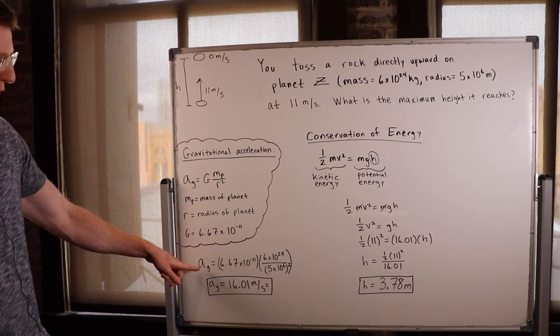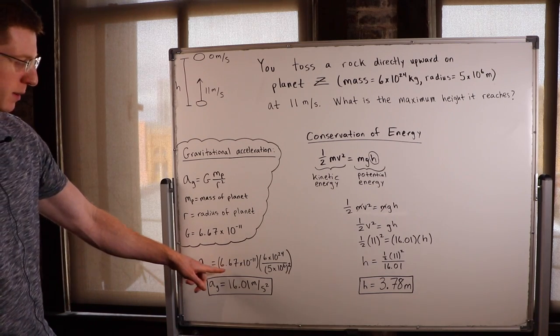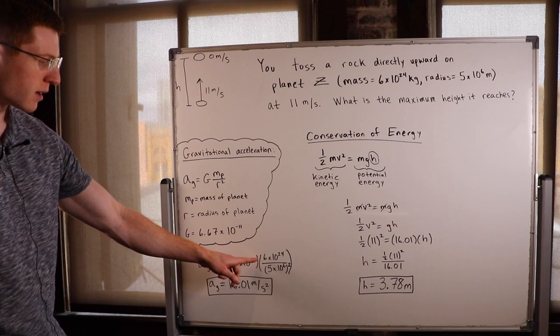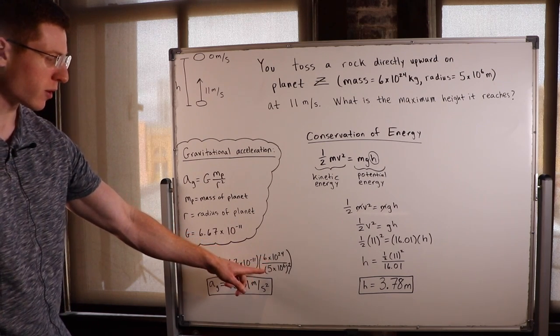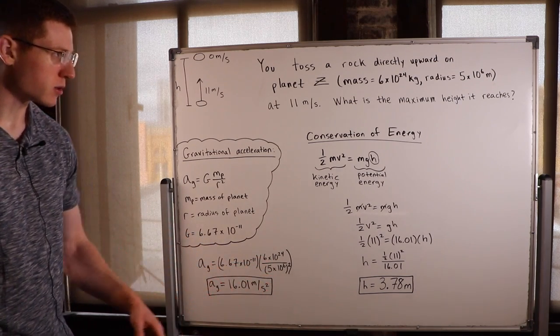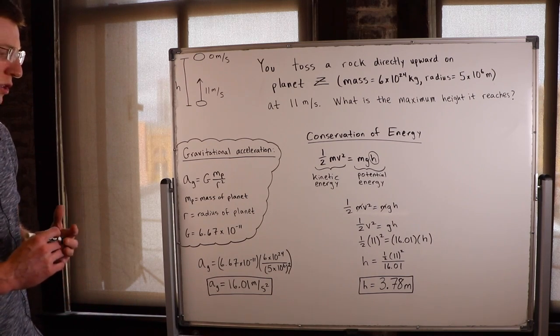So I went ahead and solved for that for planet Z. I did my big G times mass of the planet, which was 6 times 10 to the 24, over the radius of that planet, which was 5 times 10 to the 6 squared.